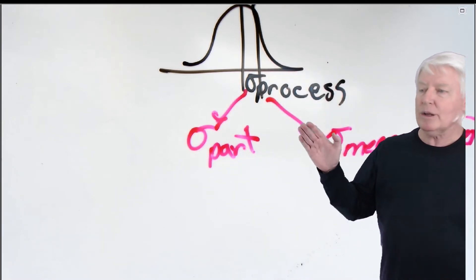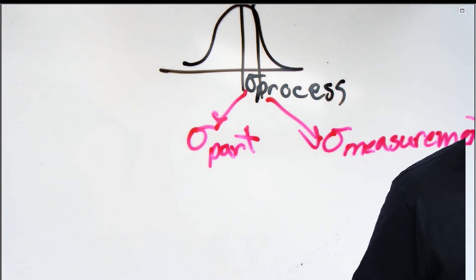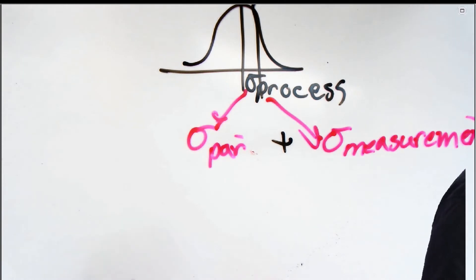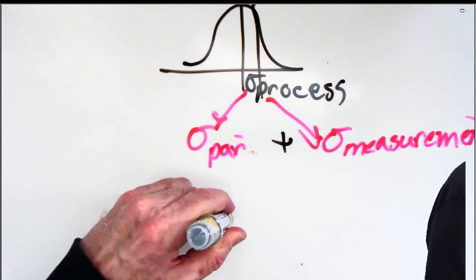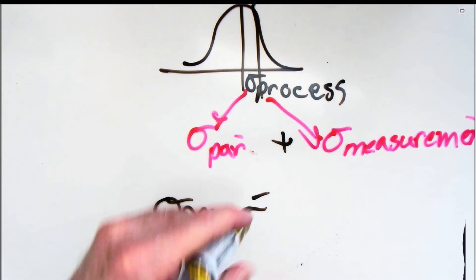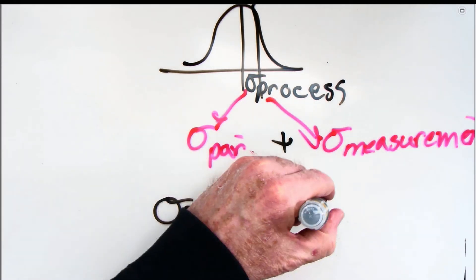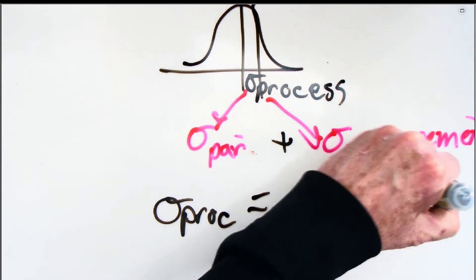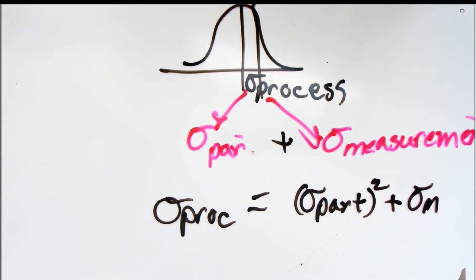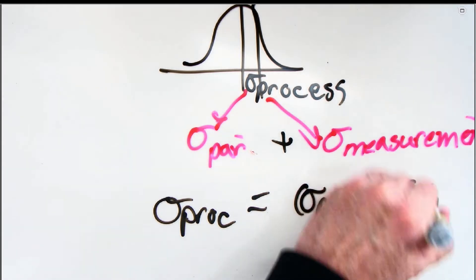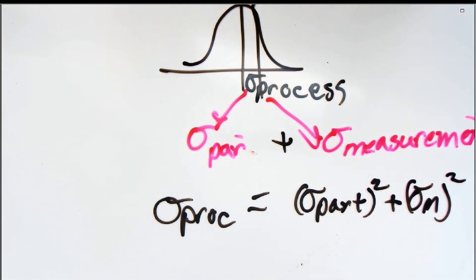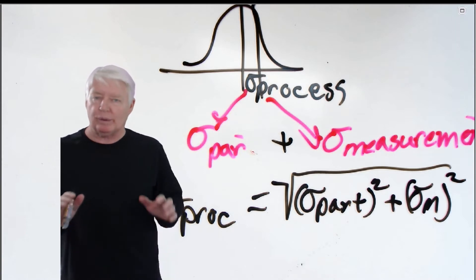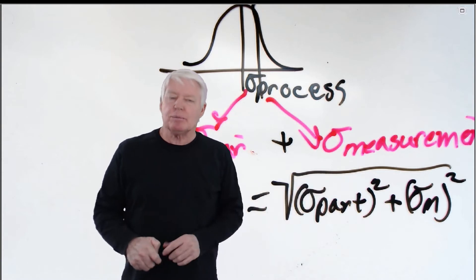Hopefully everyone's comfortable with that. The way we add sigmas together is very important. Sigma of the process equals the square root of sigma of the part squared plus sigma of measurement squared. That's how we add standard deviations together. This is going to be very important in what we do later on. Again: sigma of the process equals sigma of the part plus sigma of measurement.